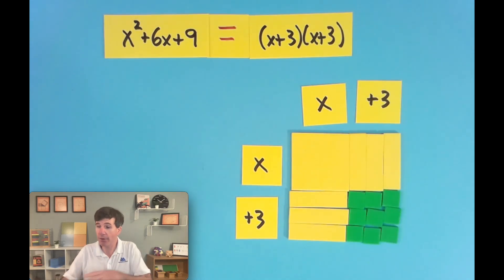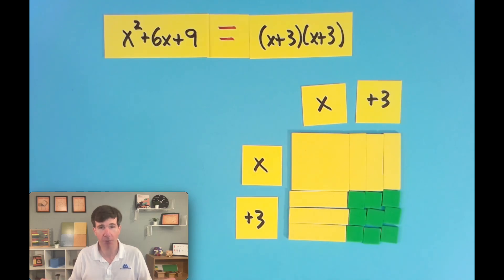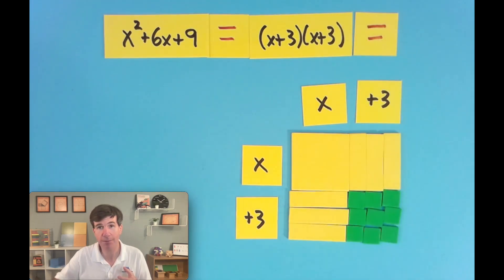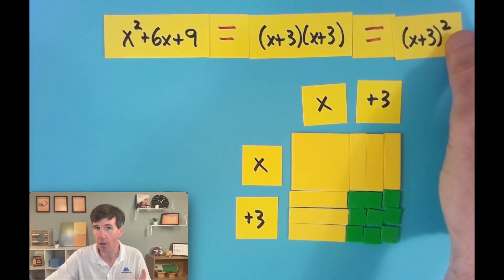Now, I'm going to say, not only do we have a special shape here, but what's special about our factors? Well, they're both the same. And of course they're both the same, because when you have a square, both sides of the square are the same. So what we can do is we don't even have to write x plus 3 times x plus 3. We have the same factor times itself. And what do we call something that's multiplied by itself? That's a square. So we could write this as x plus 3 all squared.